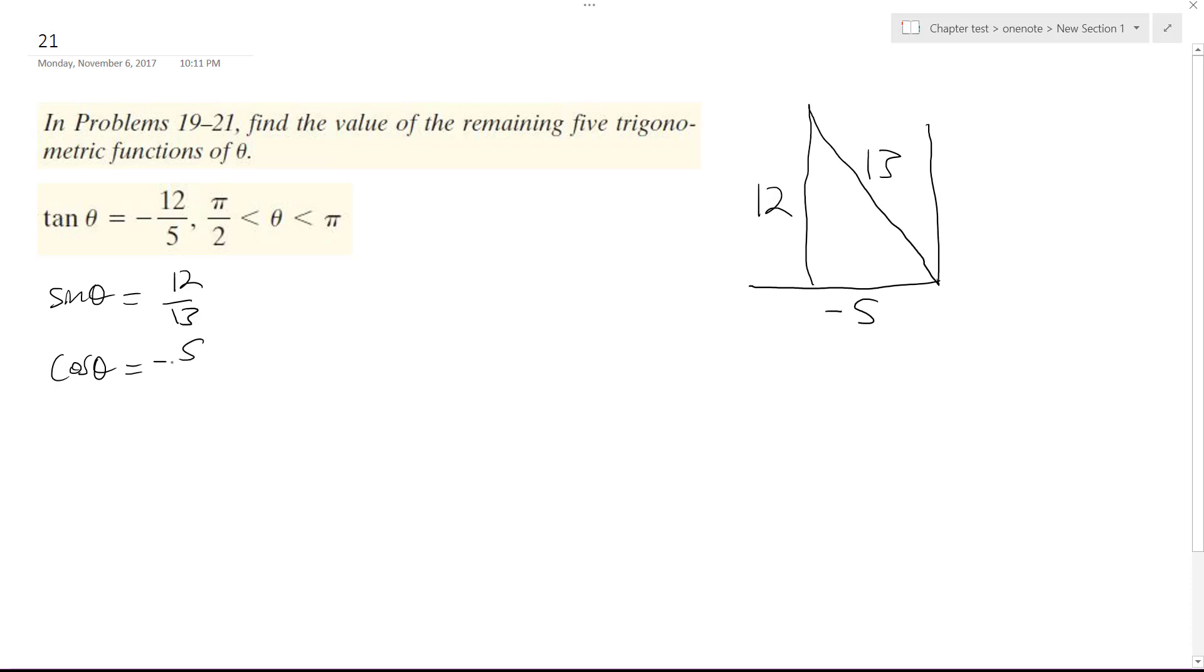Cosine theta is going to be equal to negative 5 over 13. And then cotangent theta is just the reciprocal of the tangent, so it's negative 5 over 12.